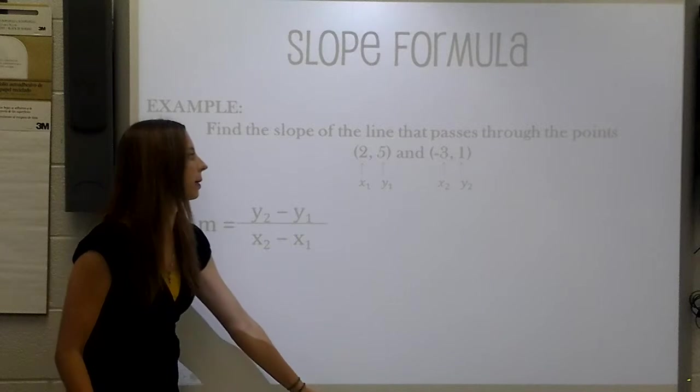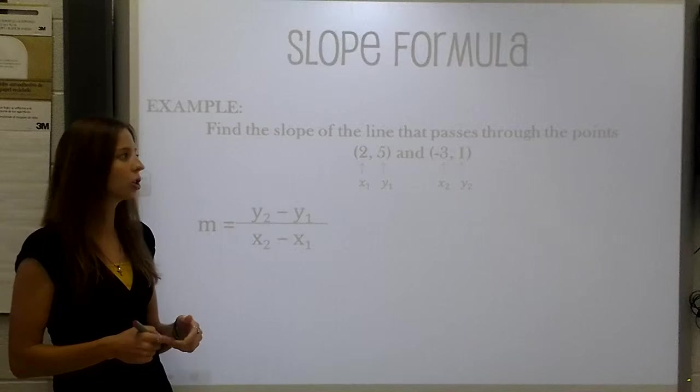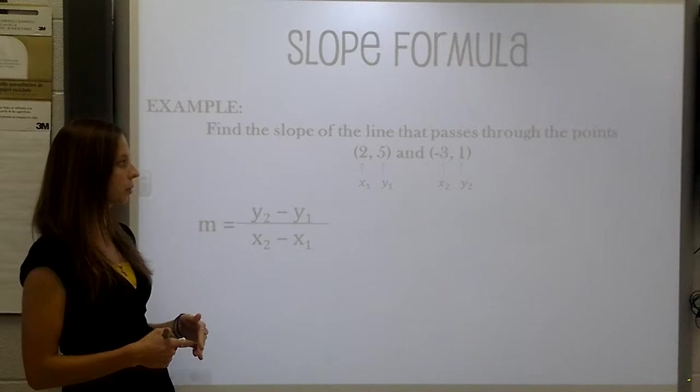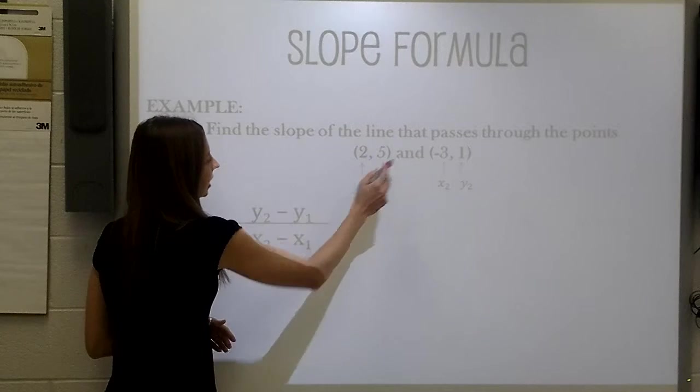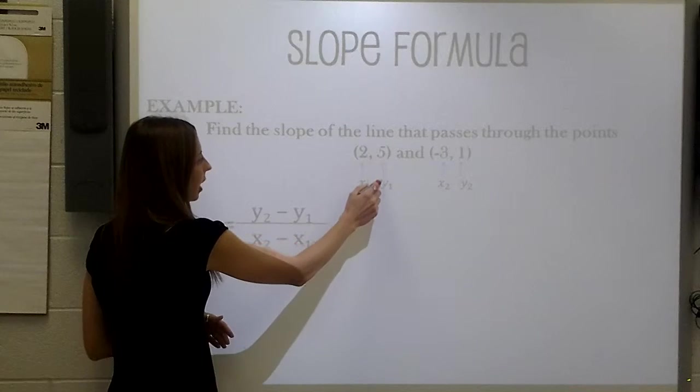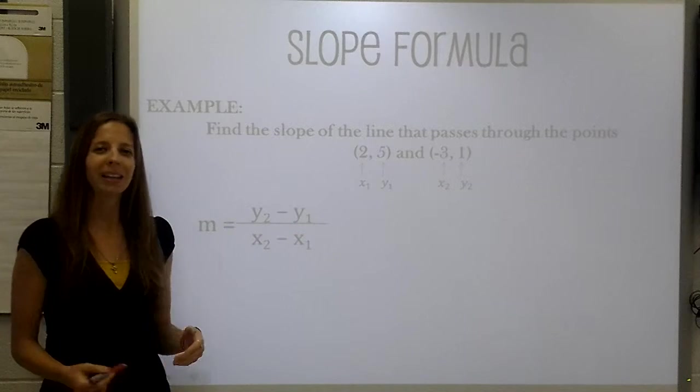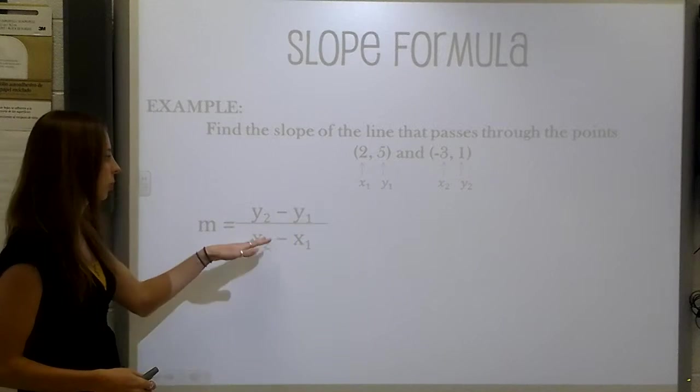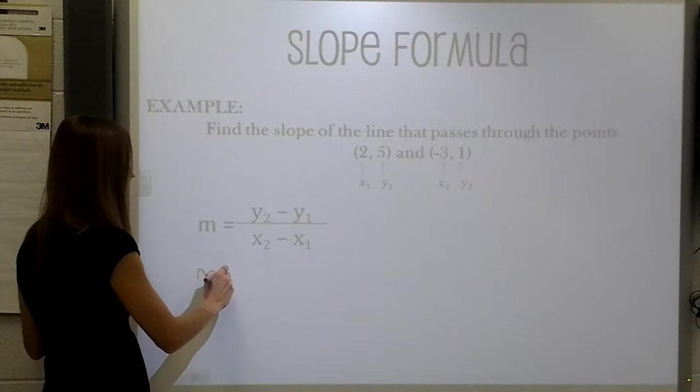Let's try an example. So find the slope of a line that passes through the points 2, 5 and negative 3, 1. I have labeled the points here x1, y1 and x2, y2. By labeling your points, it will just help make it easier when you go to plug into your equation. So now let's go ahead and do that.